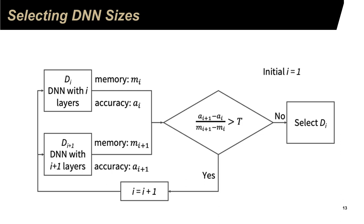The method to select the size follows this procedure: it considers the ratio of improvement of accuracy to the increase of module size. If the accuracy improves significantly when the size increases, we will add more layers. If the ratio is small, meaning further adding more layers has only marginal improvement, the node size will stay the same. By taking this approach, different nodes in the tree may have different numbers of layers.